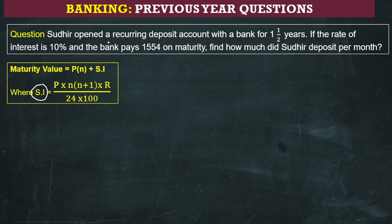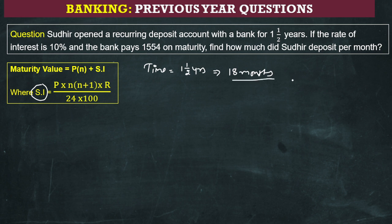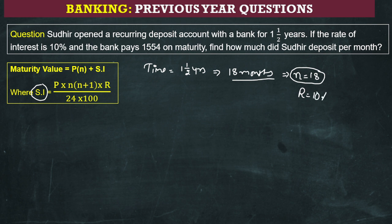In this particular question, Sudir opens a recurring deposit account with the bank. The time given is one and a half years, which when converted into months becomes eighteen months. The maturity value provided to us is 1554.